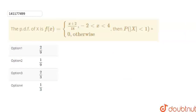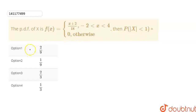Hello friends, welcome to Doubtnut. In this question we have given: the PDF of X is f(x) = (x + 2)/18 when x is between minus 2 to 4, and 0 otherwise. Then probability of |x| < 1 equals — first option is 2/9, second option is 1/9, third option is 2/3, and fourth option is 1/3.